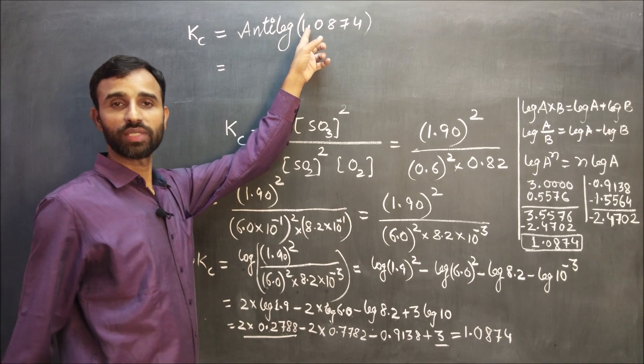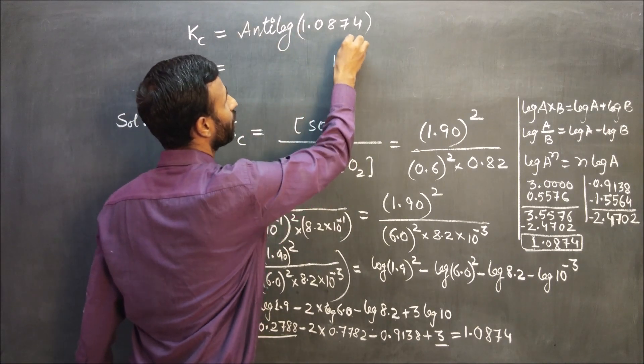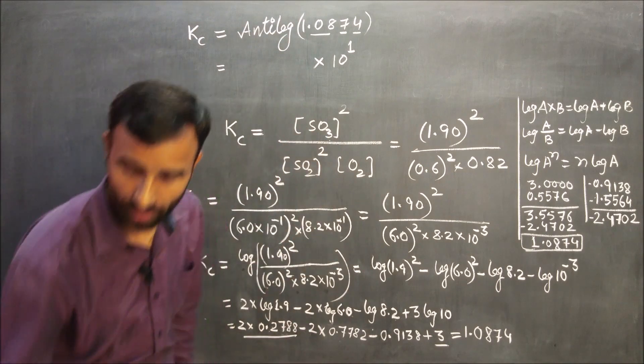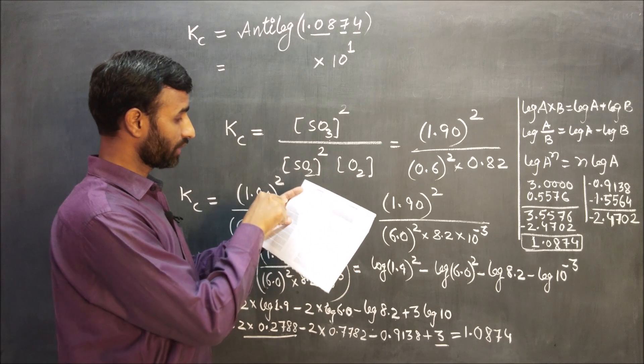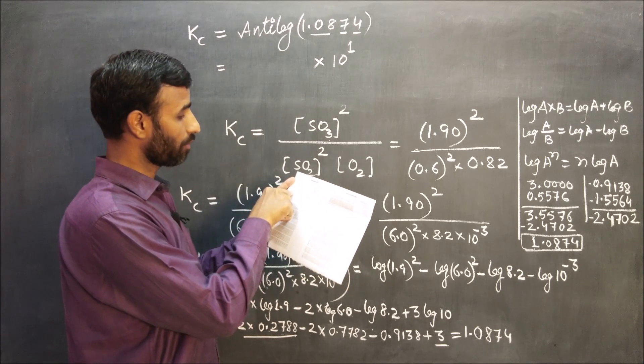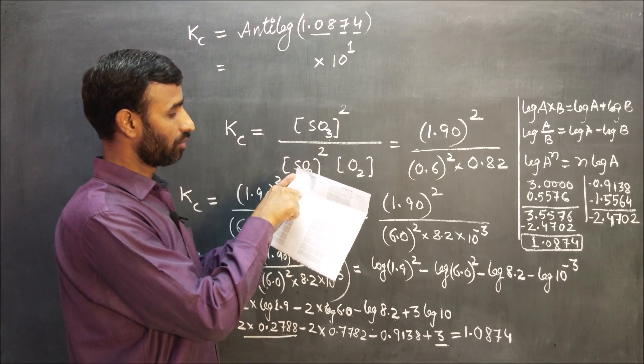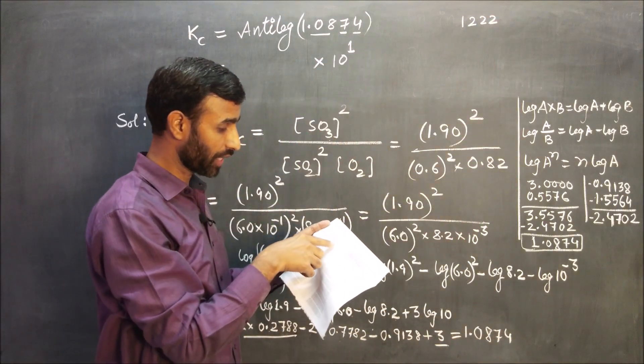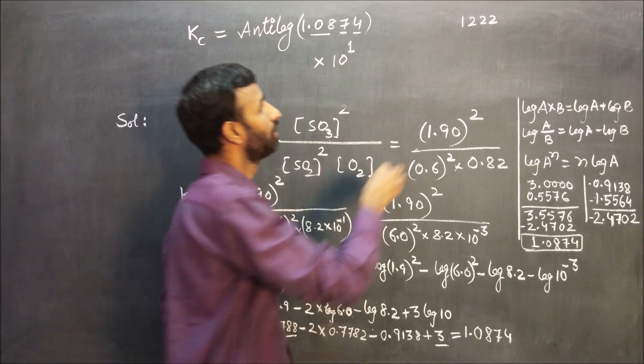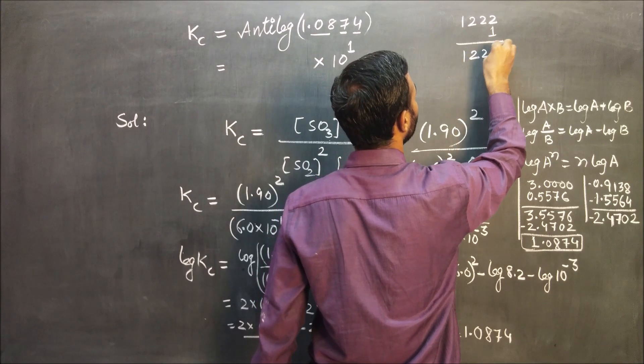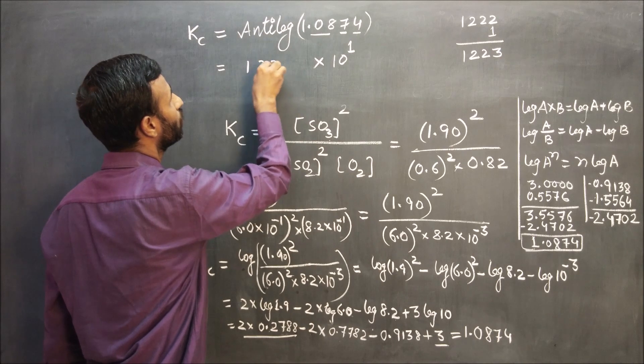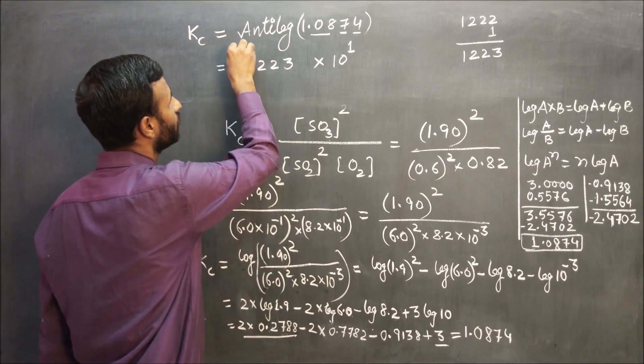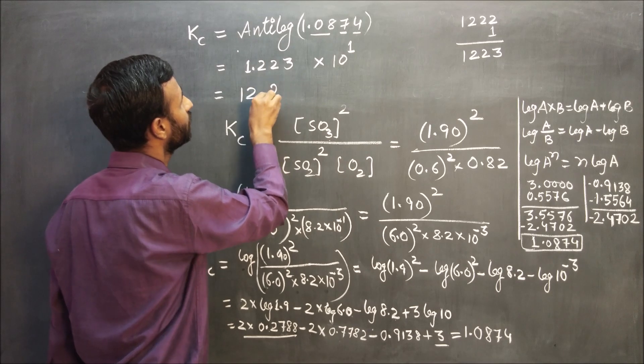So Kc is equal to antilog of 1.0874. First look at what is decimal, which is the number before decimal. The number is 1, which is the power of 10. Now, 0.0874 is the mantissa. Point 0874, the value from antilog table is 1, 2, 2, 2. And the 4 is the mean difference, the value is 1. This means 1, 2, 2, 3. So this is 1, 2, 2, 3. Four digits, we have to leave one number before decimal. So this is the value 12.23.